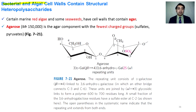Bacterium and algae cell walls contain structural heteropolysaccharides. Red algae and seaweeds contain agar, and agarose is one component of agar. It consists of galactose dimer repeating units. The first galactose in the dimer is unmodified, while the second galactose contains an ether linkage between the third and fifth carbons, and a sulfate group is added to the second carbon of the second galactose.